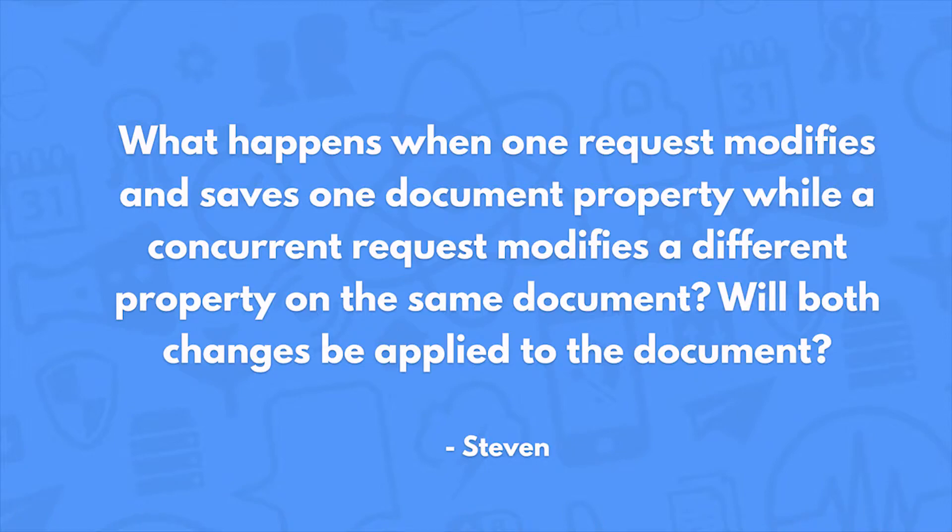What happens when one request modifies and saves one document property while a concurrent request modifies a different property on the same document? Will both changes be applied? In this case the answer would be yes — both would get applied because the concurrent requests were touching different properties. If they were both trying to change the same property, then whichever one came in last would win — that's like a race condition. As long as they were performing separate operations, that should be fine.